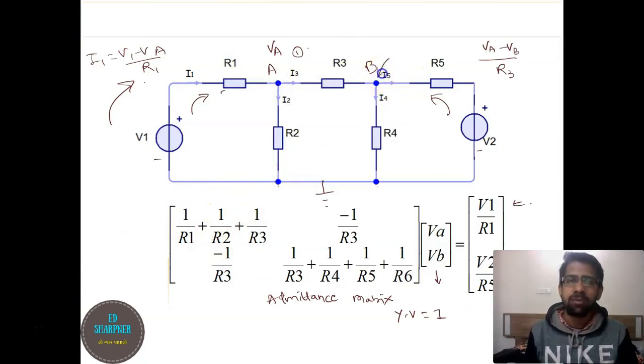Similarly, let us see for node B. At node B there are three admittances connected again, which are 1 upon R3, 1 upon R4, 1 upon R5. So these many we have written.